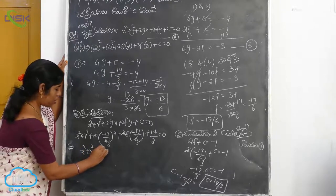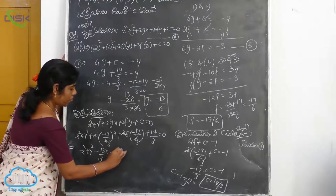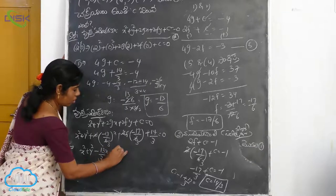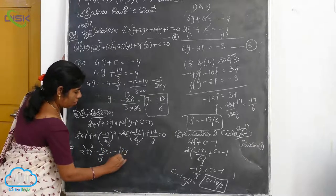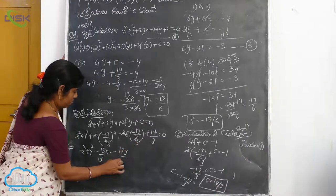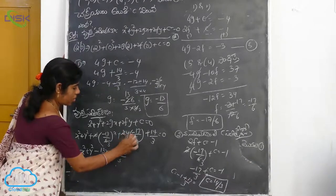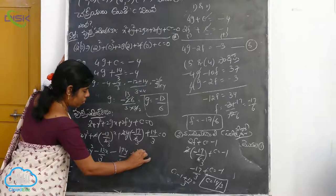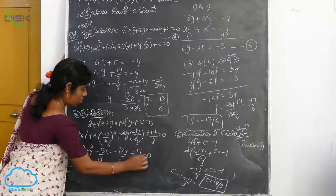So the equation becomes: x² plus y² minus 13x by 3 minus 17y by 3 plus 14 by 3 is equal to 0.